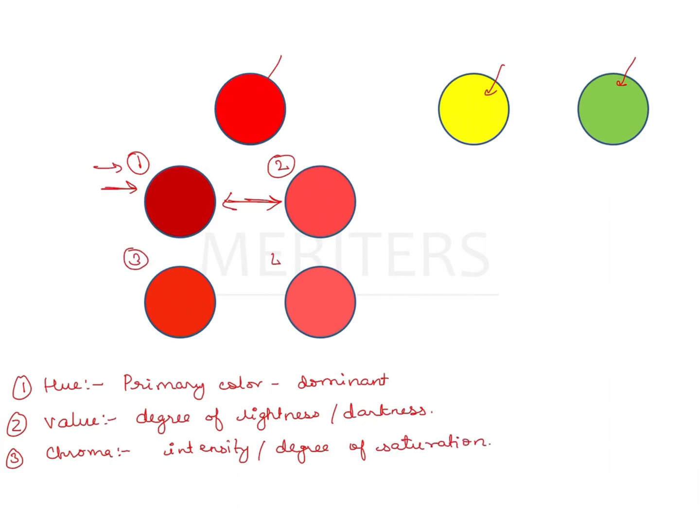Now consider number three and four. Three is more scarlet and intense red compared to four. So three has more chroma as compared to four.